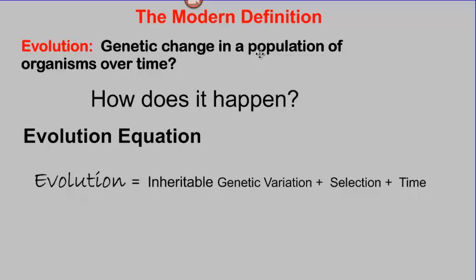So for evolution to happen, for genetic change in a population of organisms to occur, there has to be some kind of inheritable genetic variation. And we'll talk more about what that means. There has to be a selection process, and then time has to pass. And as long as these three things are present, evolution will happen. If any one of these three is not present, then evolution will not occur. So let's take them one at a time.